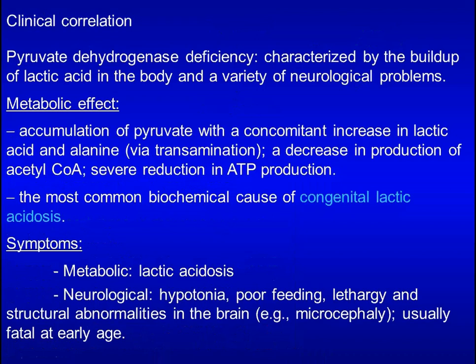Pyruvate dehydrogenase deficiency leads to accumulation of pyruvate and lactic acid, and decreased acetyl-CoA and ATP production. This is the most common cause of congenital lactic acidosis. Reduced ATP production accounts for hypotonia, poor feeding, and lethargy in newborns. Buildup of lactic acid leads to lactic acidosis.